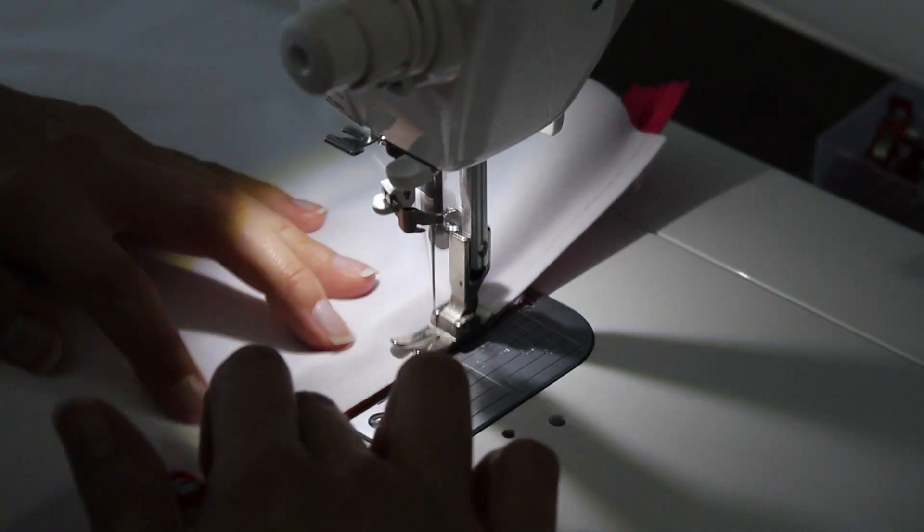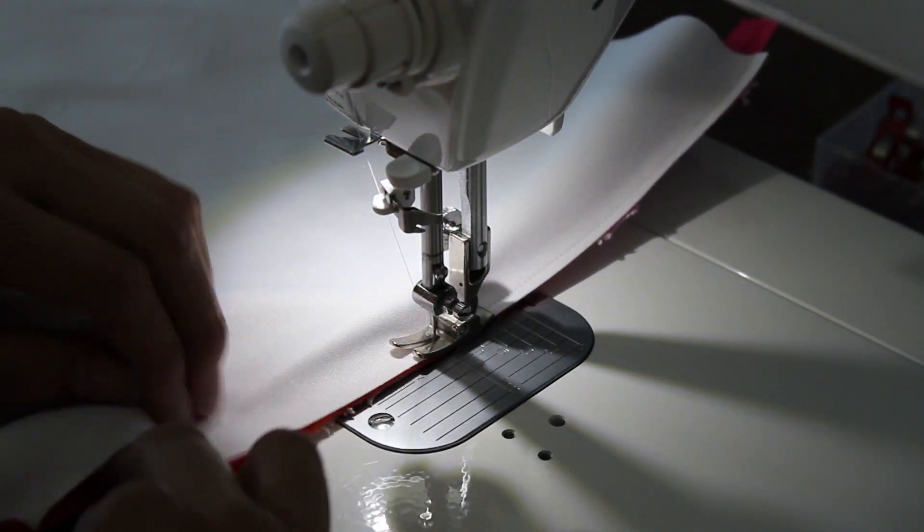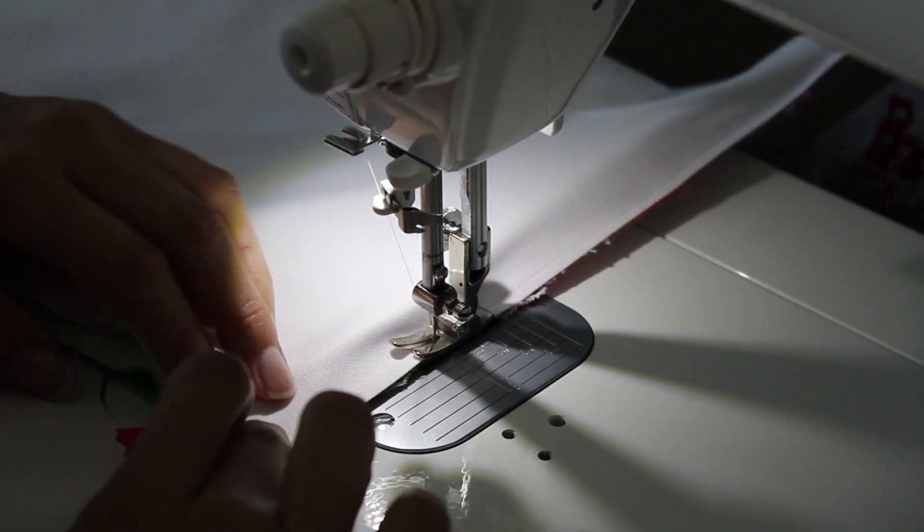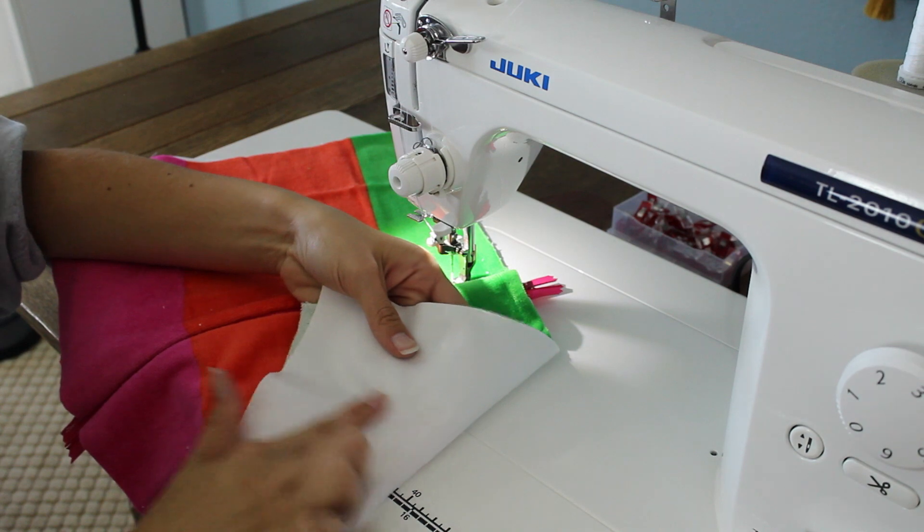Then you are going to sew down the other side of your zipper. Again, making sure all those layers are together. Make sure you have your machine threaded with your polyester thread.